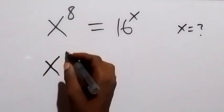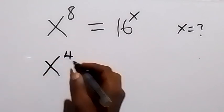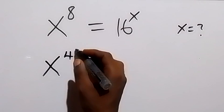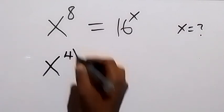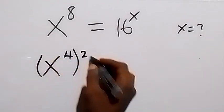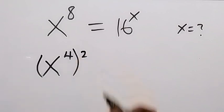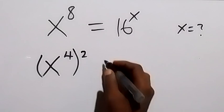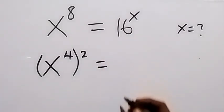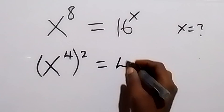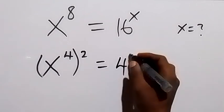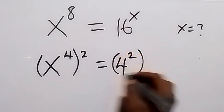x raised to the power 4, then raised to the power 2, because we have 2 times 4 which is the same thing as 8. Then this equals 16, which we can express as 4 raised to power 2, then raised to power x.